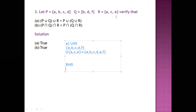So Q union R will be written as {A, B, C, D, E, F}. This is Q union R.